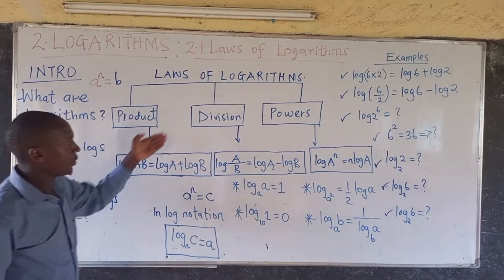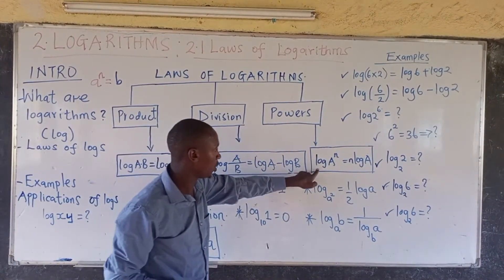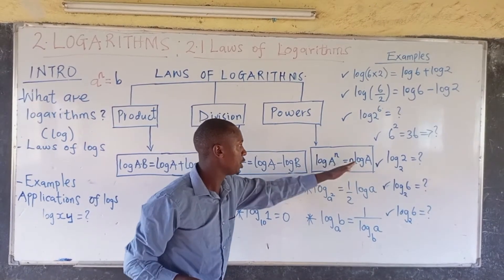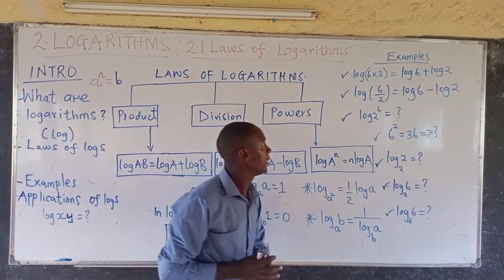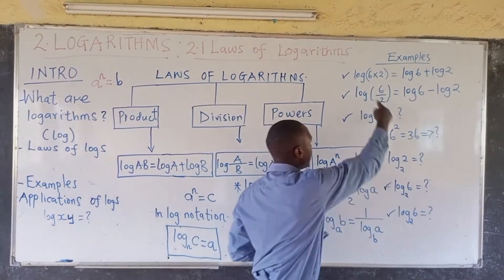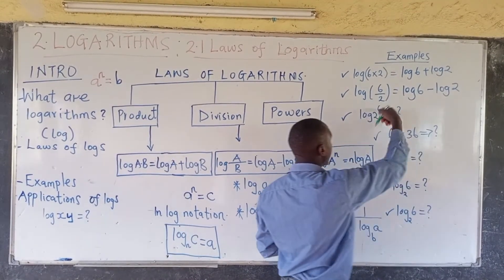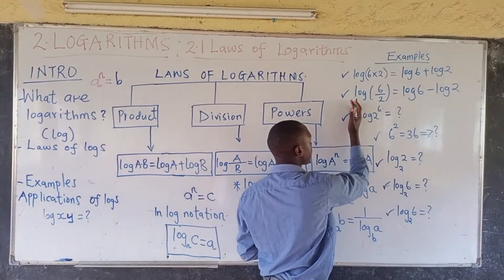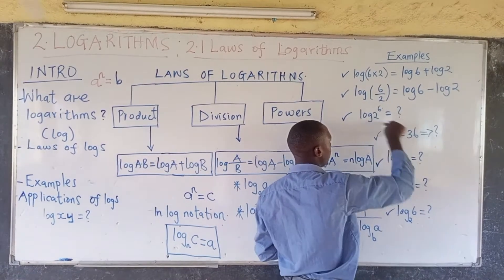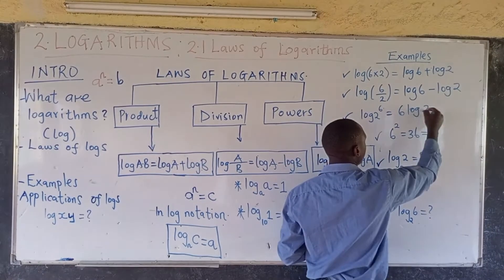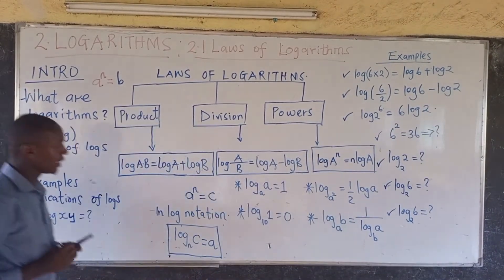And in the case where we have powers, log of A to the power N equals N times log A. For this example, we multiply the power by log 6 times log 2. Those are the main laws of logarithms that we have in mathematics.